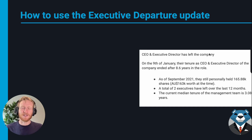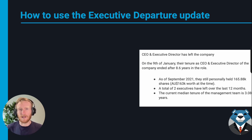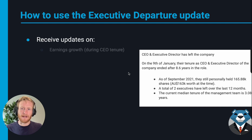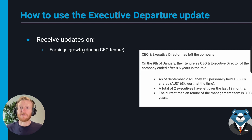The executive departure update revolves around any executive who has left their role within a company, or left the company entirely. Here on the right is an example of a CEO leaving. If it's a CEO and there's been a notable amount of earnings growth, we'll cover the earnings growth that occurred during that CEO's tenure to show how they influenced the underlying performance of the business.